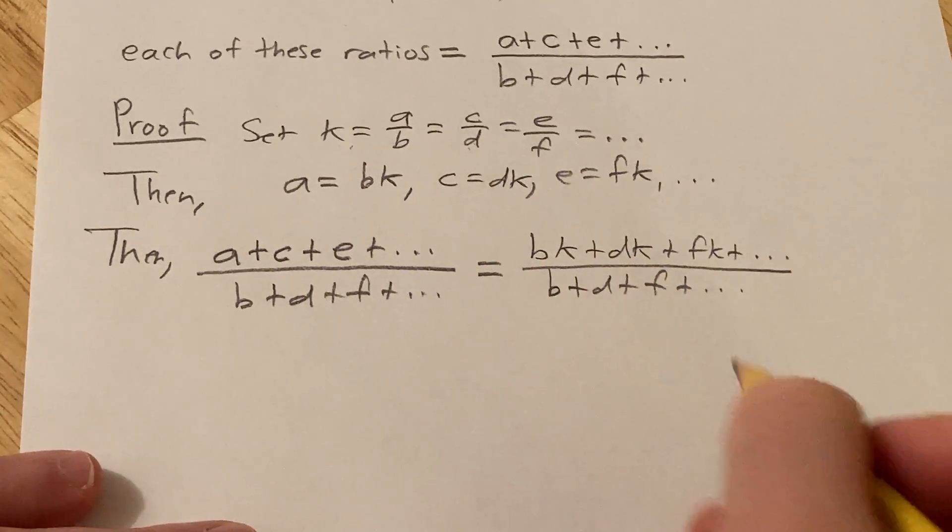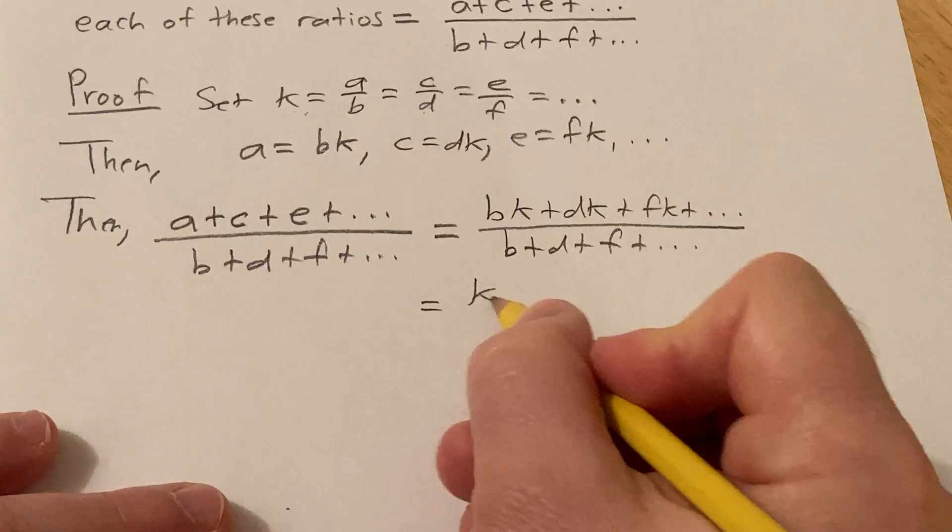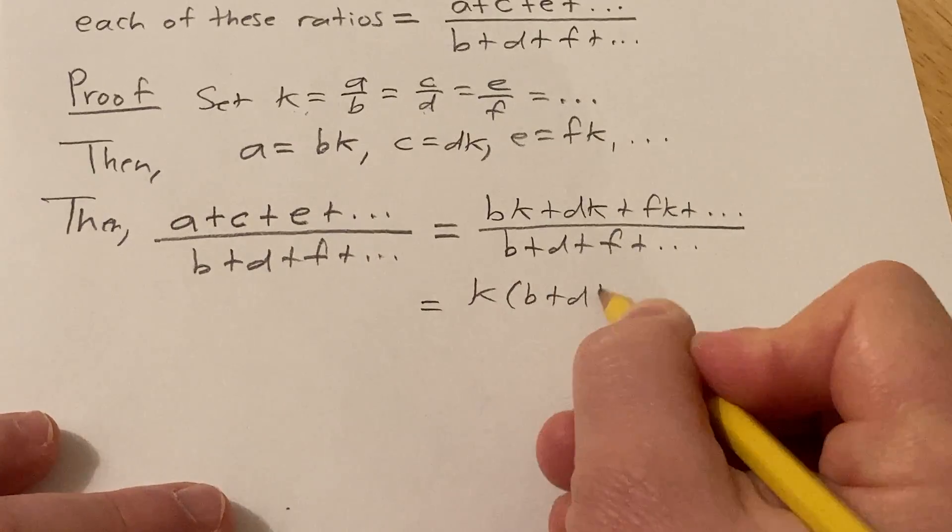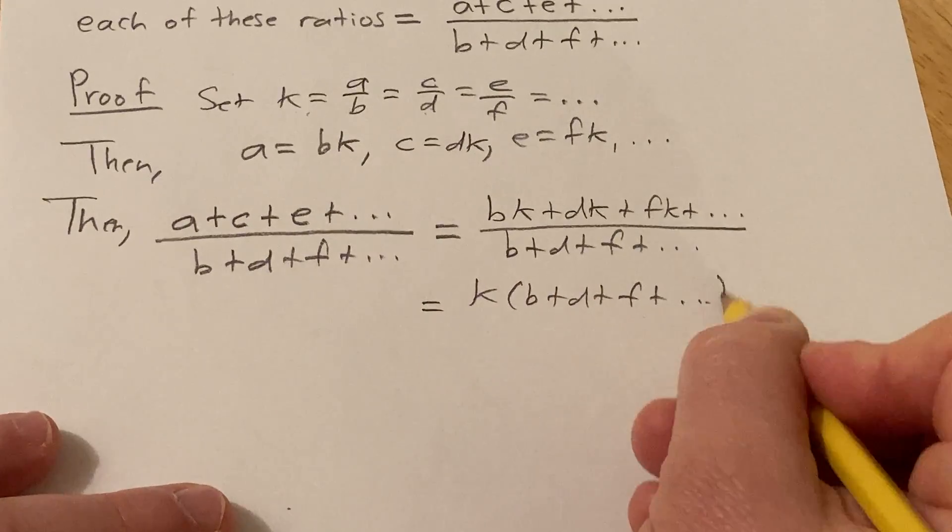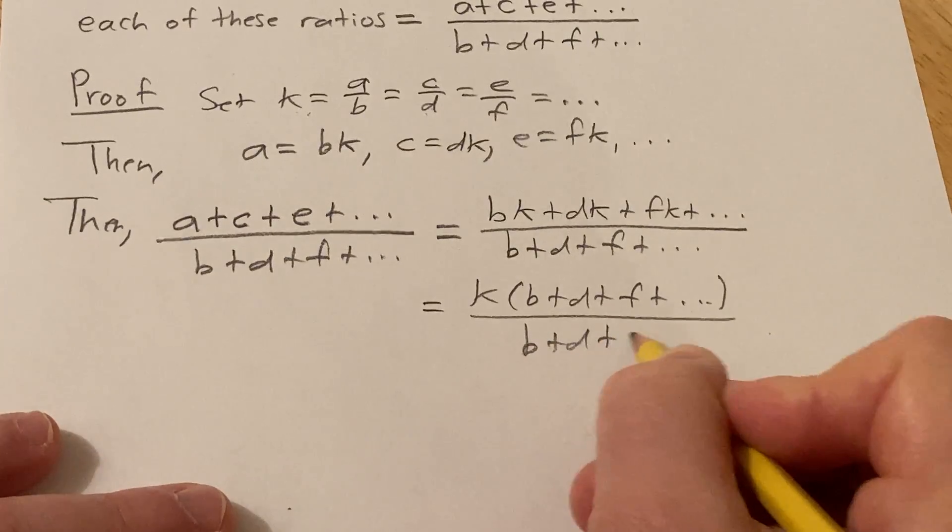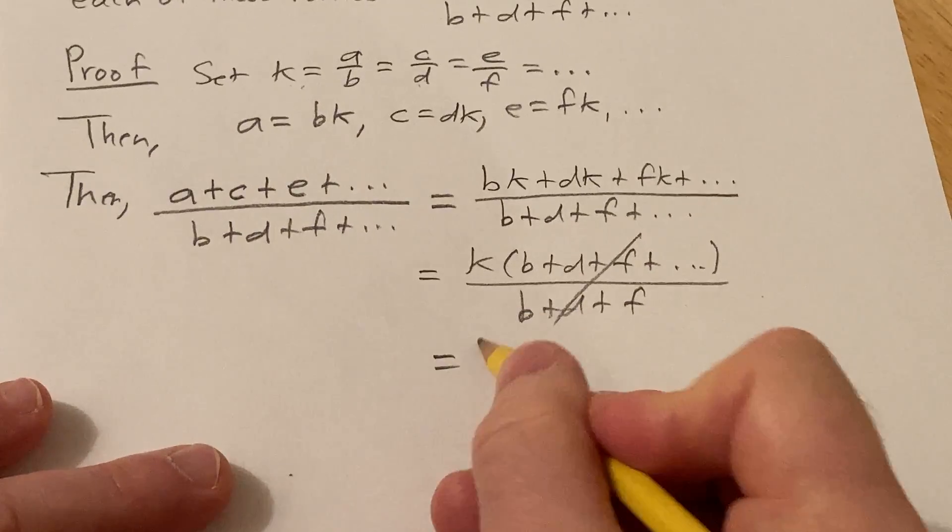And then in the denominator we have b plus d plus f. Pretty simple. You can pull out a k. So you have k times (b plus d plus f) over b plus d plus f. Cancels and you get k.